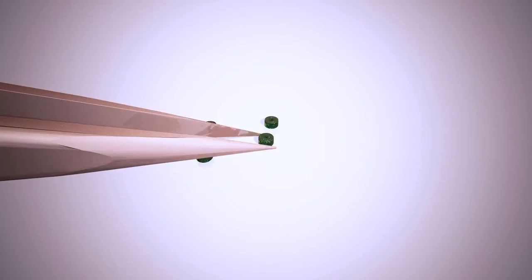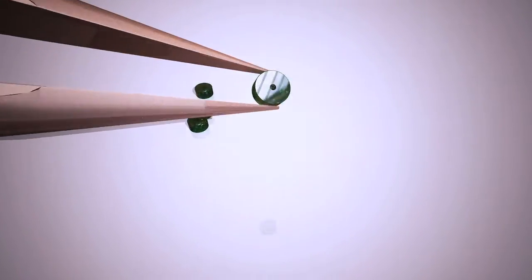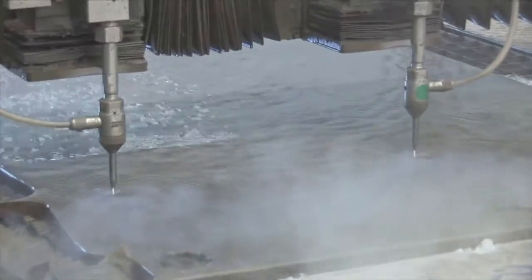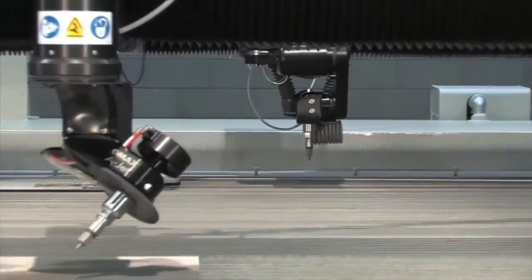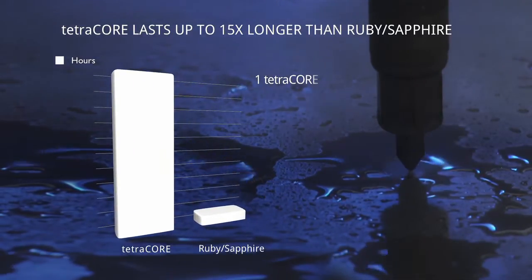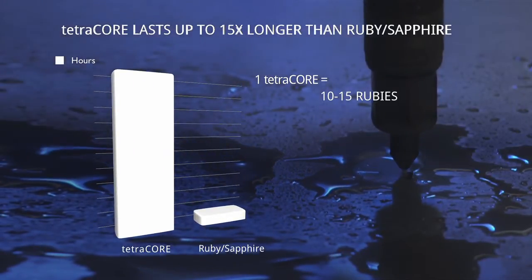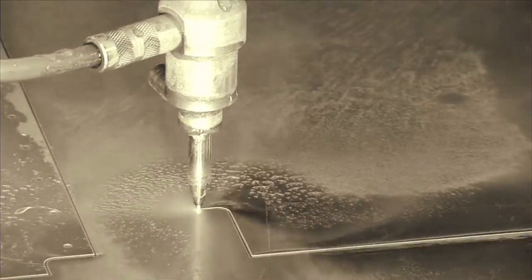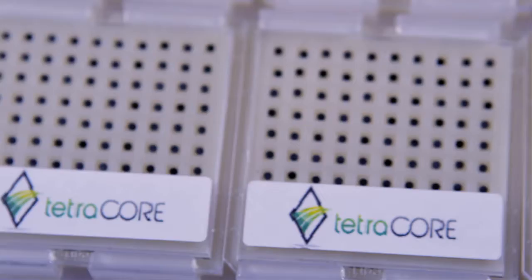The new Tetracore orifice offers a more reliable, more cost-efficient solution for every waterjet application with a significant increase of 10 to 15 times more orifice life when compared to rubies and sapphires, far greater jet stream consistency and far less supervision.